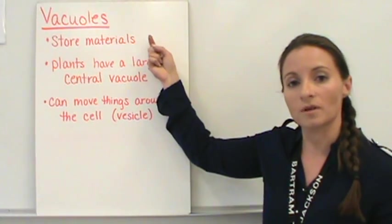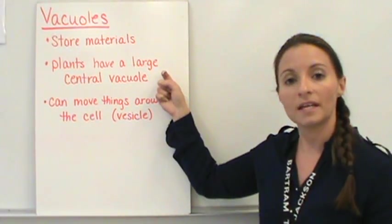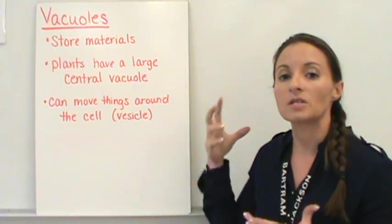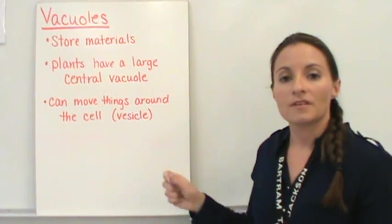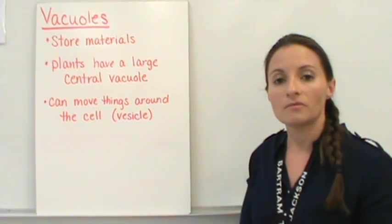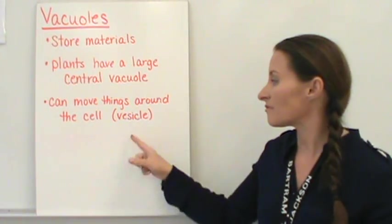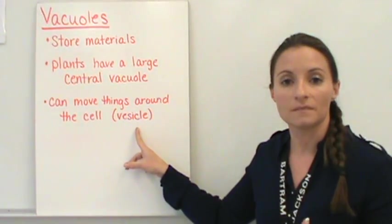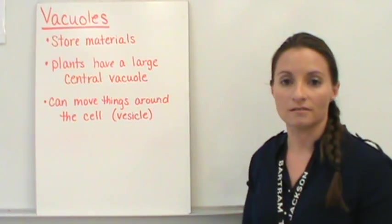So vacuoles will store material. It can be anything, but for the most part in plants, in their central vacuole, it's going to be water. There are also vacuoles that can move things around the cell. As they start moving things around the cell from place to place, we will refer to those as vesicles. So vacuoles are our storage containers within the cell.